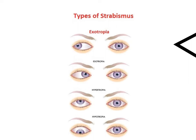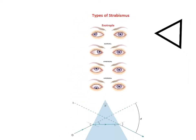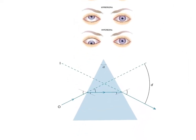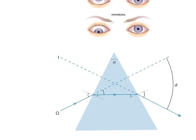From a previous video, you can remember that a prism moves an object — it makes the object appear to move. So here's the object, and here's the image. The object appears to move towards the apex. This is the apex over here.